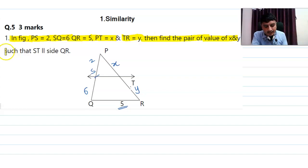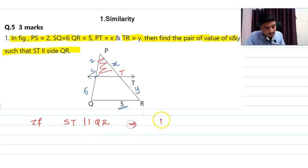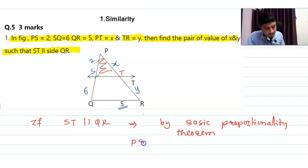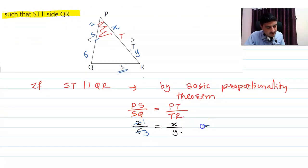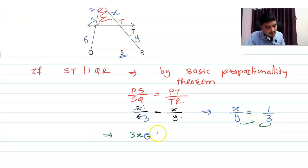If ST is parallel to QR, then by the Basic Proportionality Theorem: PS/SQ = PT/TR. Substituting values: 2/6 = x/y, which simplifies to 1/3 = x/y. Cross-multiplying gives 3x = y, i.e., y = 3x.